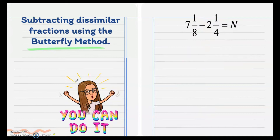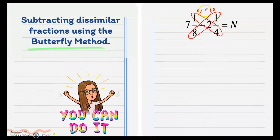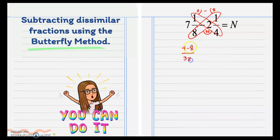Next, still with dissimilar fractions, we follow the butterfly method by cross-multiplying. This 1 and 4 gives us 4, and 1 times 8 gives us 8. Now subtract the new numerators, which is 4 minus 8. As you can see, the minuend is less than the subtrahend, so we cannot subtract right away. So what we're going to do first is multiply the denominators: 8 times 4 is 32. We write here 4 minus 8 over 32.